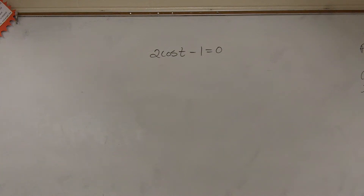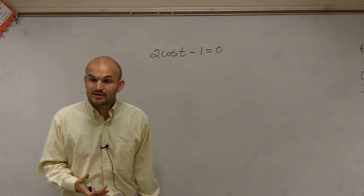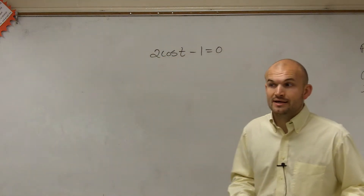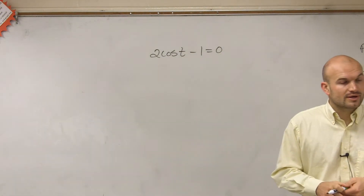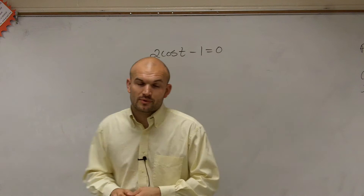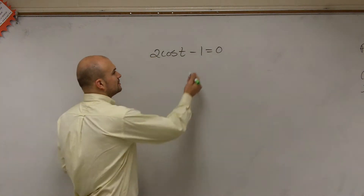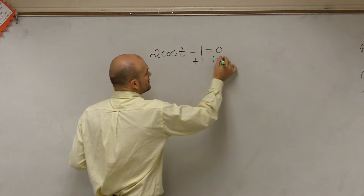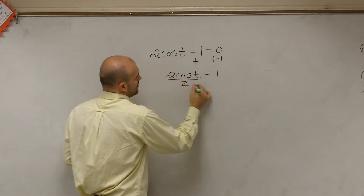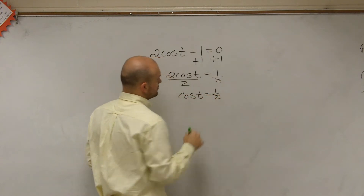Let's take a look at this one and see how else we can write the answer. If I don't give you a constraint of solving on [0, 2π], we're going to have to learn a different way to write the answer. The main important thing when we want to solve for our value t — you just use your inverse operations. Then we divide by 2, and you get cosine of t equals 1/2.